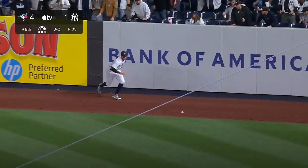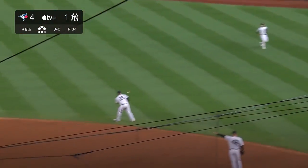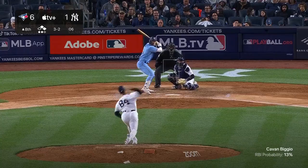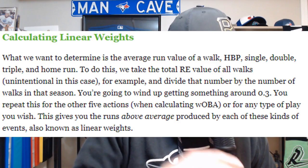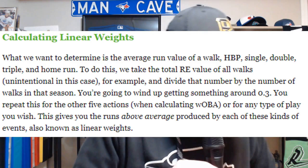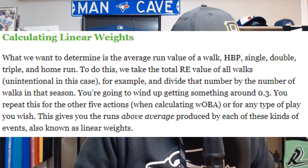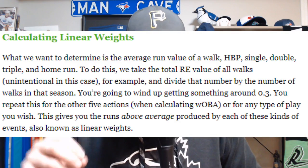We do that for all 24 base-out states for every outcome in every single baseball game. Once we have that total, we divide by the number of times that particular base-out state occurred — essentially finding an average. The total runs scored from the point of that base-out state divided by the number of times it occurred gives the runs above average produced by each type of event, also known as linear weights.